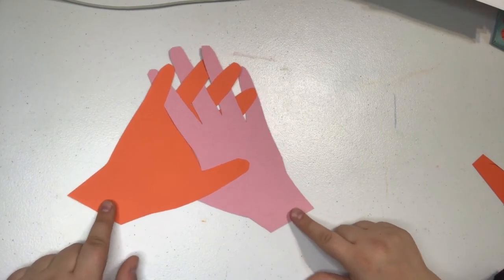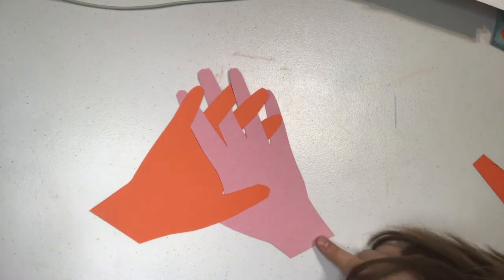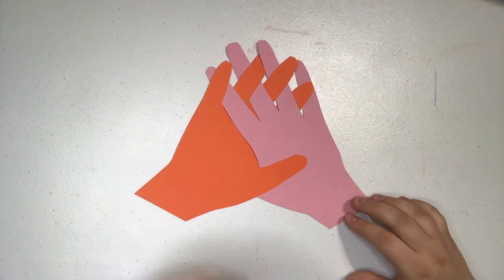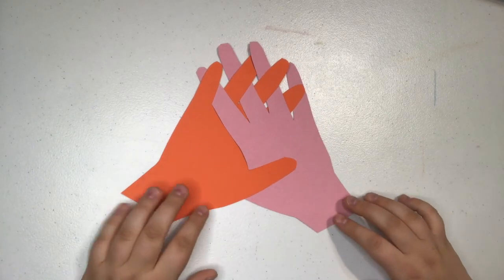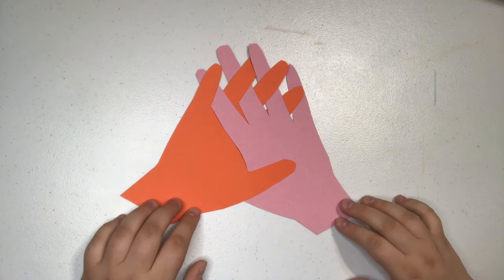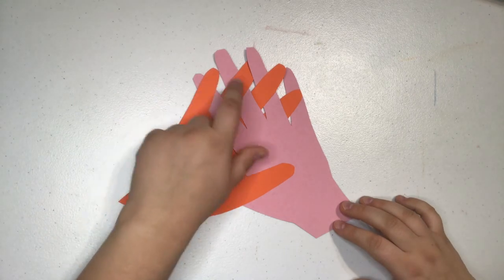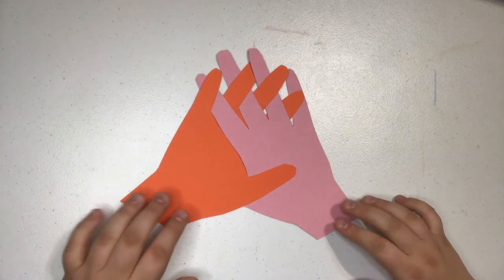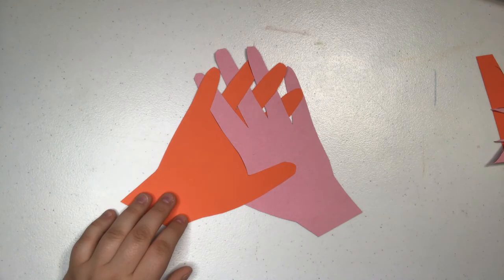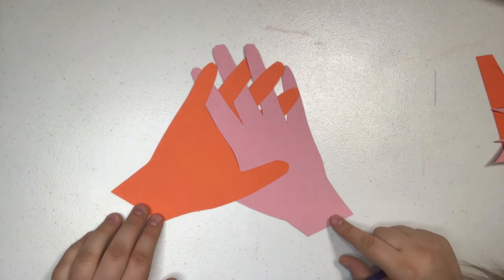Remember we're thinking about things that we are grateful for, things that are special in our lives and things that we are really thankful for. So thinking about those things, you can write what those things are on the fingers that are intertwined. I'm going to use all different colors to write the things that I'm thankful for. You can also decorate your hands however you would like.